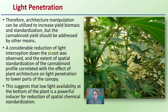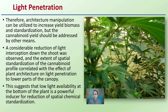What does that mean? Basically, the penetration of light diminishes quite substantially as you get deep into the canopy. This suggests that low light availability at the bottom of the plant, or in deeply shaded regions, is a powerful inducer for reduction of chemical standardization — meaning buds that are in the shade, further away from the lights, are simply going to yield fewer cannabinoids. Having good plant structure and exposing those buds to the greatest intensity of light was advantageous to increase cannabinoid profiles and standardization.